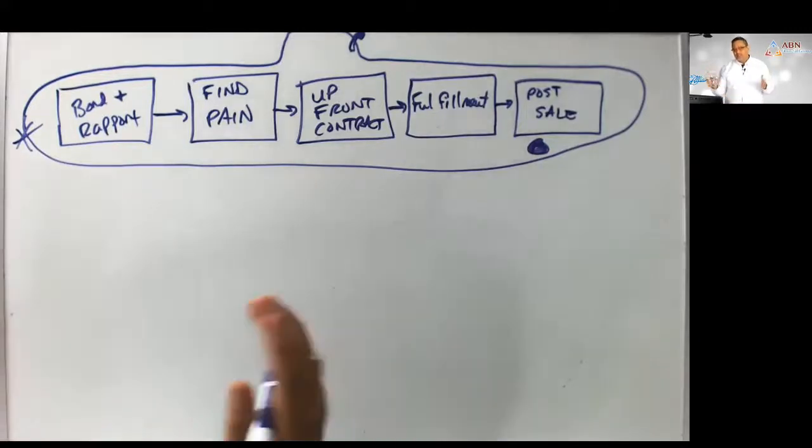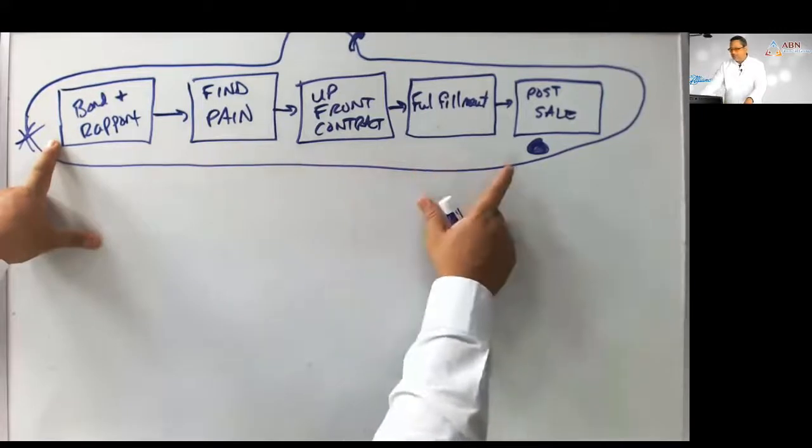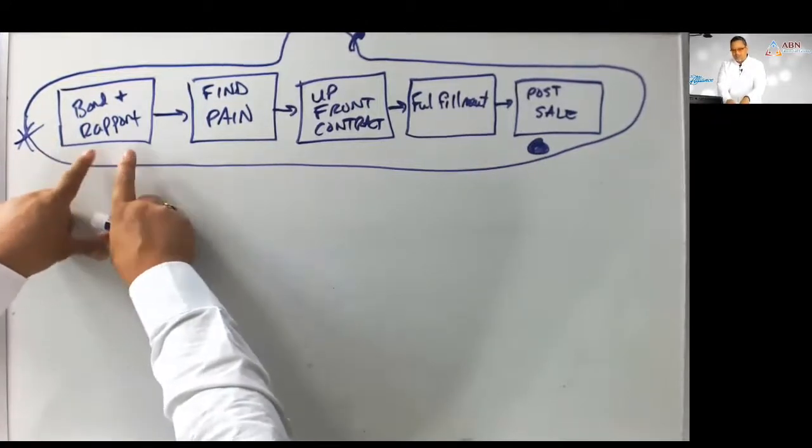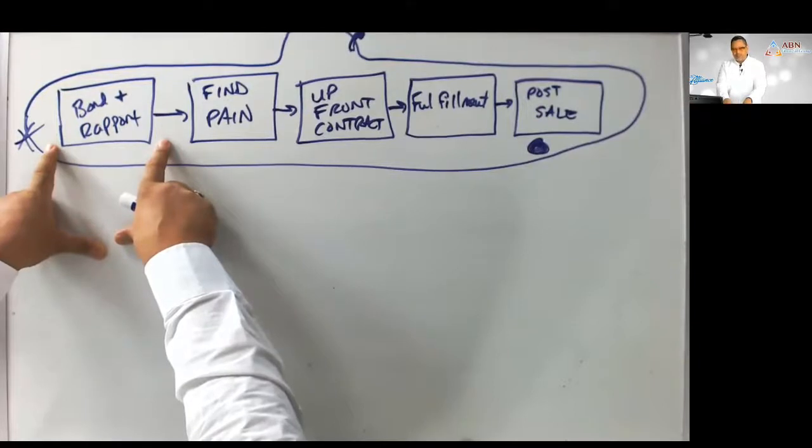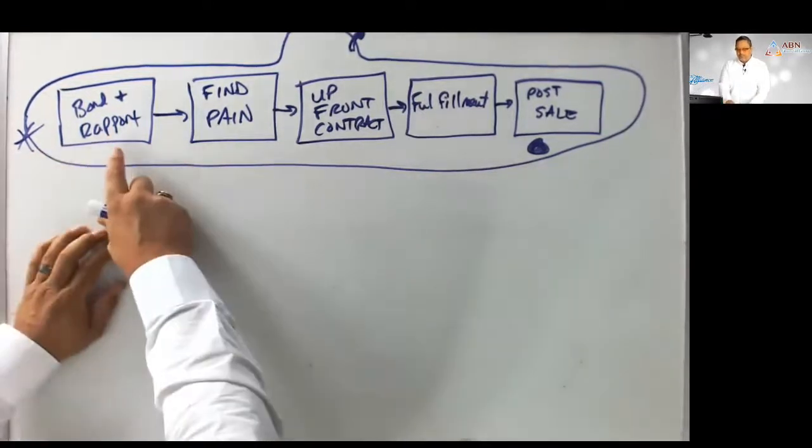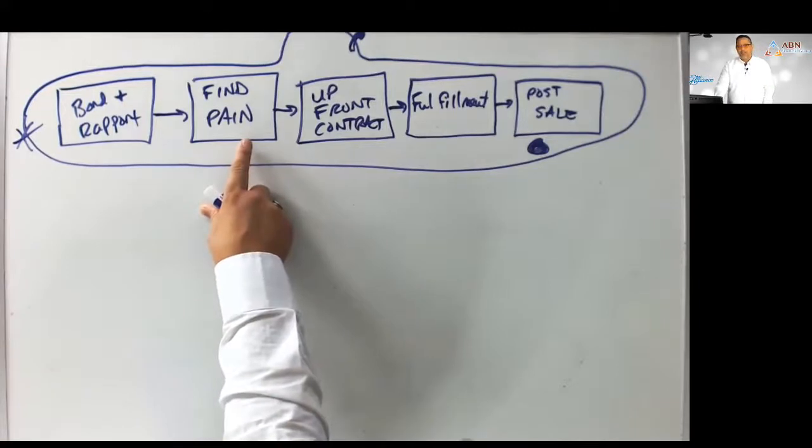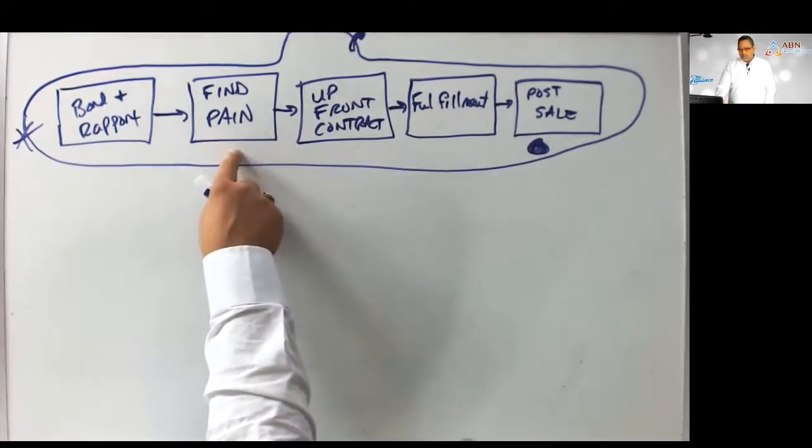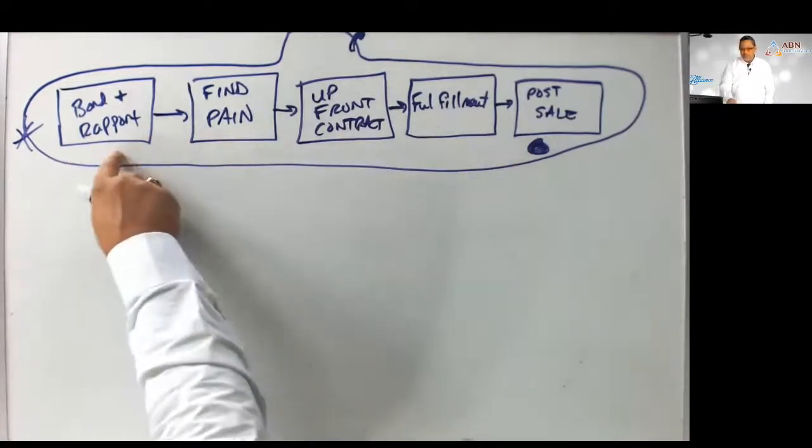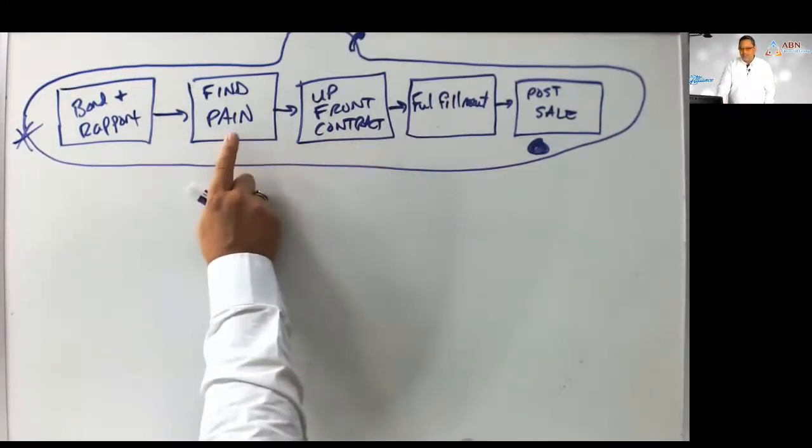Why do we call it a submarine? We call it a submarine because submarines are built in compartments. Each compartment can be shut off watertight from the other compartments, so it ensures survivability. If a hull is breached in one particular compartment, you can spin the hatches down to close it off so it doesn't flood the rest of the submarine and you die. And that's the same with this. Every compartment is self-contained. Every subsequent compartment cannot be entered into until you close the previous compartment.